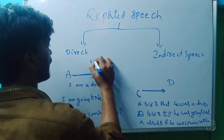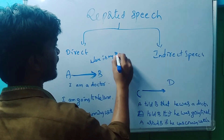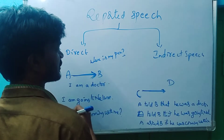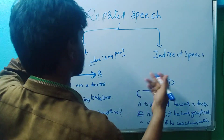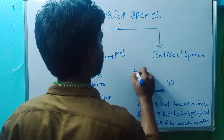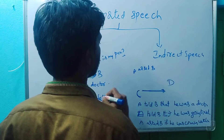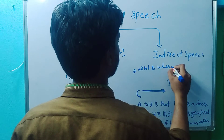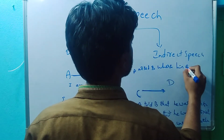A to B said: 'Where is my pen?' This is a WH interrogative. The same sentence in indirect speech becomes: A asked B where his pen was.